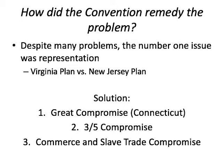There were a lot of problems, and the remedy needed to fix them. The biggest issue was representation — how could big states and small states each get what they wanted? There were two plans offered: the Virginia Plan and the New Jersey Plan. The solutions that came out were a series of compromises.